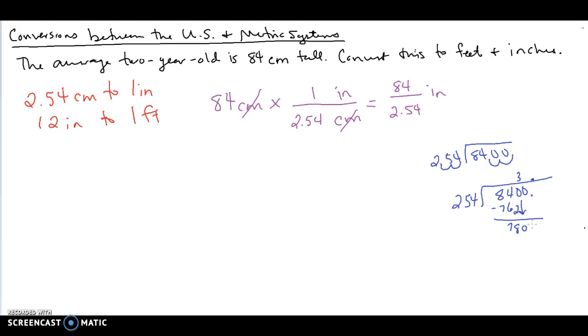So 254 goes into 780 three times again. We already know that that's going to be 762. That's going to leave us with 18. Let's drop down this zero. So 254 goes into 180. Actually it doesn't go into 180. So let's put a zero up here. That means we've got to put a zero down here because zero times 254 is zero. So it's going to leave me with 180.